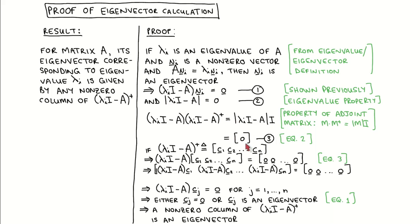Since the determinant of lambda I times I minus A is equal to zero, the right-hand side becomes the zero matrix. We now label the columns of the adjoint matrix as the vectors C1 to Cn, and we stick this into equation 3, which gives us this line.